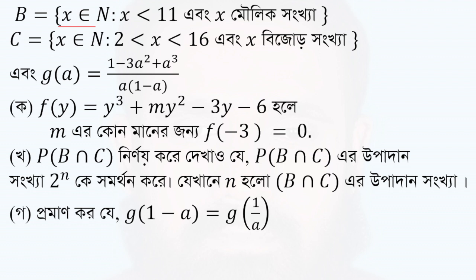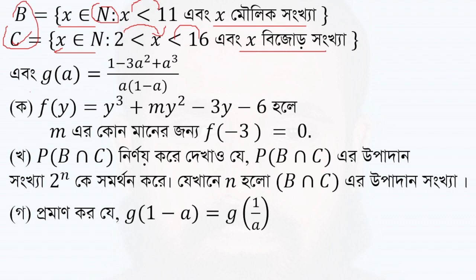2 is equal to 1 minus 3a squared plus a cubed by a into 1 minus a. 2 is equal to 1 minus a.